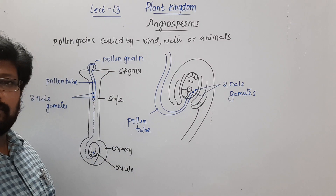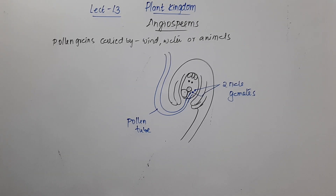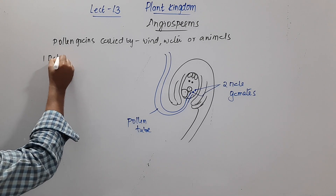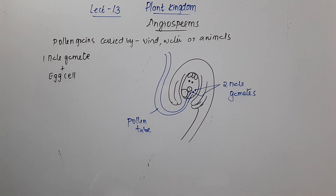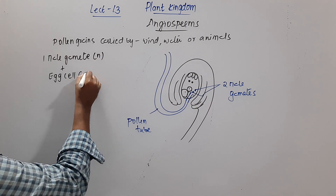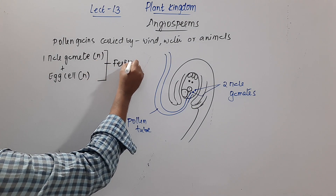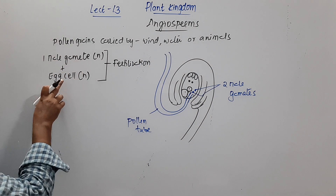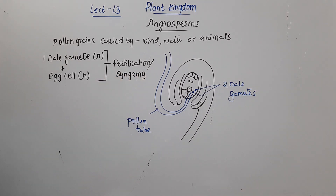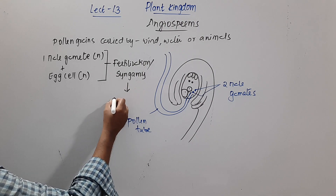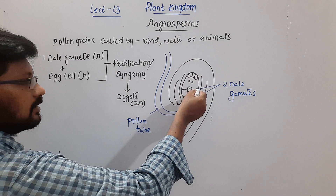Two male gametes are released into the embryo sac. One of the male gametes fuses with the egg cell. Since both the male gamete and the egg cell are haploid, this fusion is called fertilization or syngamy. Syngamy results in the formation of a diploid zygote.